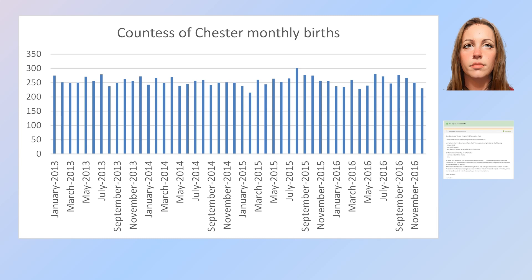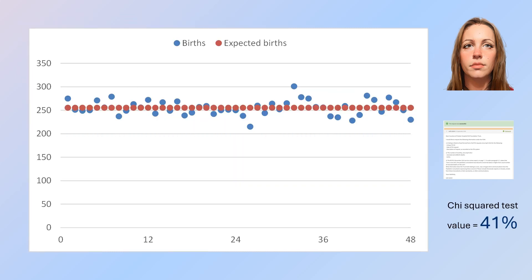It's really not something you need to study, but I'll put a link to a Wikipedia page in the notes should you wish to look into it. Let's do our first statistical test. Here's the same actual birth data in blue, plotted as dots rather than columns. I fitted a red trend line to the data, which suggests, as we can see by eye, that the data is pretty constant from year to year. I'm going to test the hypothesis that the expected number of births each month is constant over time. I set the expected births each month to the average value, which is circa 250, and the actual data scores 41% on the chi-squared test.